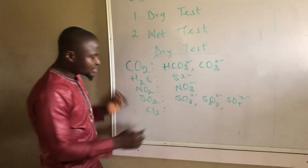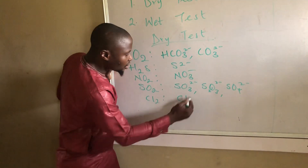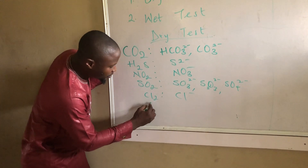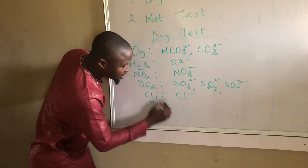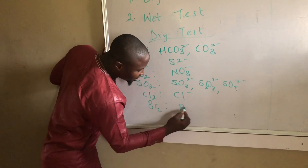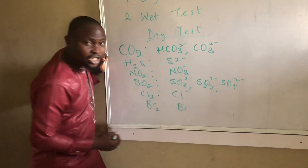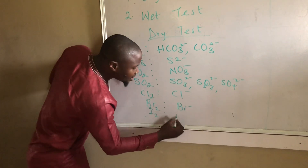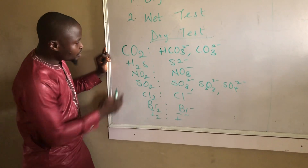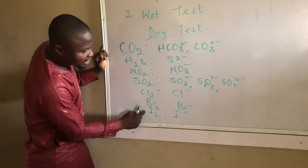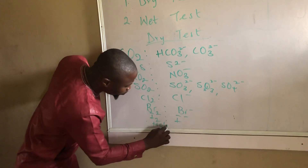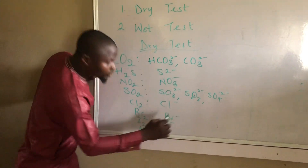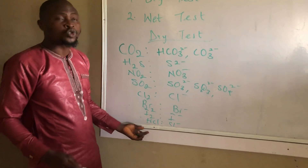When chlorine gas is evolving, the chloride ion is present. Number six: we have bromine gas — when this gas is evolving, then the bromide ion is present. Number seven: we have iodine gas — when this gas is evolving, the iodide ion is present. Number eight: we have hydrogen chloride gas — when this gas is evolving, the chloride ion is also present. So if any of these gases is evolving, these are the corresponding anions that are present in the unknown substance.